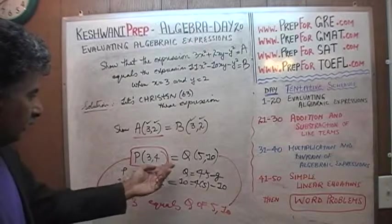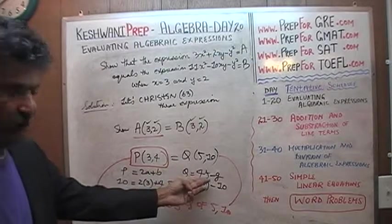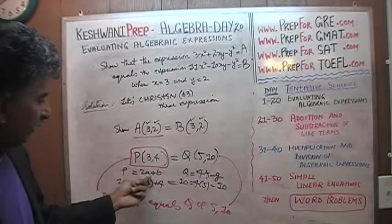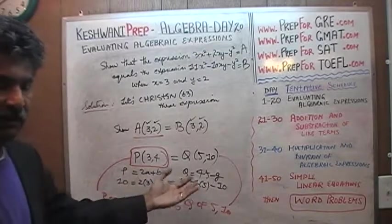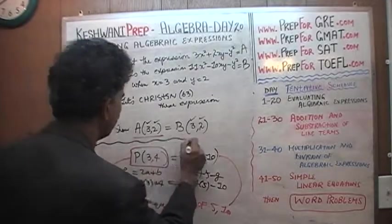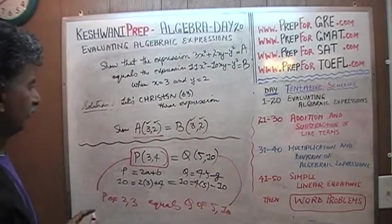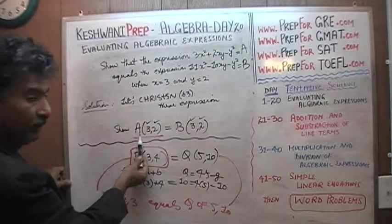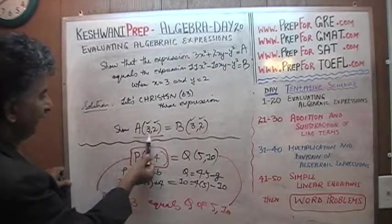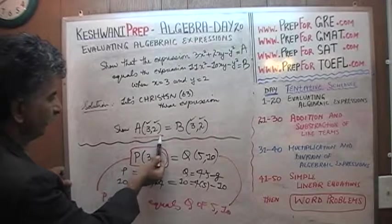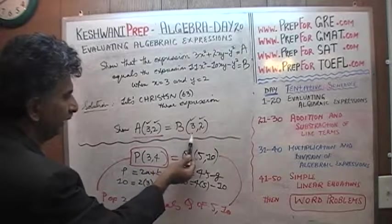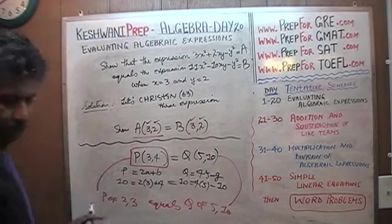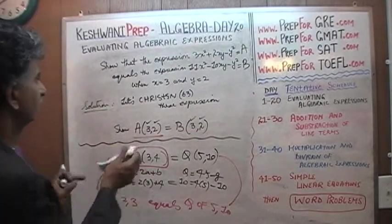Do you understand? Expression Q is made up of two variables F and G; expression P is made up of two variables A and B — they are not the same variables. Anyway, let's keep it separate here. Our job is to show that the value of expression A when x is 3 and y is 2 is the same as the value of expression B when x is 3 and y is 2. Let's do it.